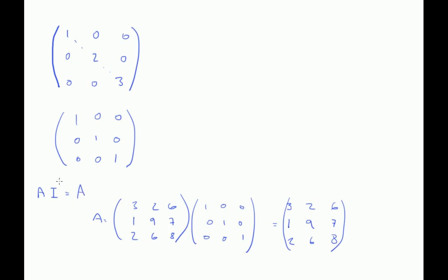A three by three square matrix multiplied by this three by three unit matrix will give us the original matrix. Similarly, you can do that the other way around too.